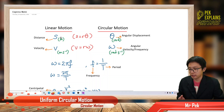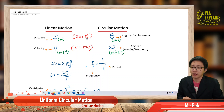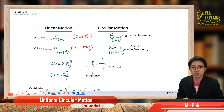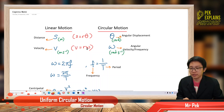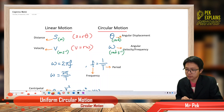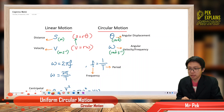Between distance and angular displacement, the formula relating these two is s = rθ. So if we have angular displacement, we can calculate the arc length. Between velocity and angular velocity, the formula is v = rω. These two formulas are very similar: velocity corresponds to distance, and angular velocity corresponds to θ.